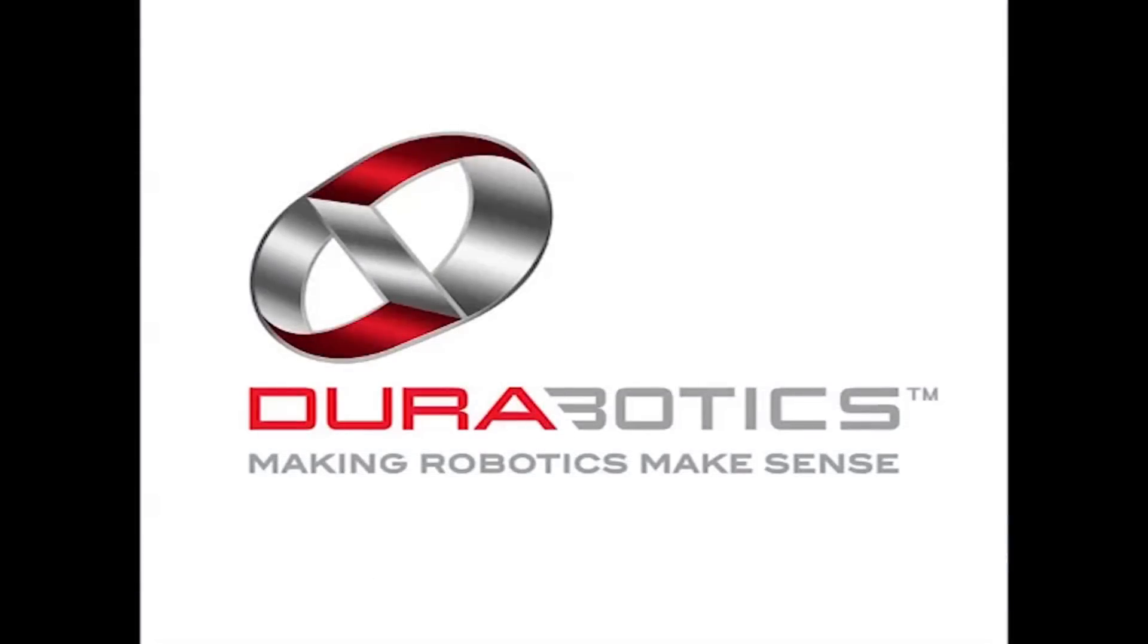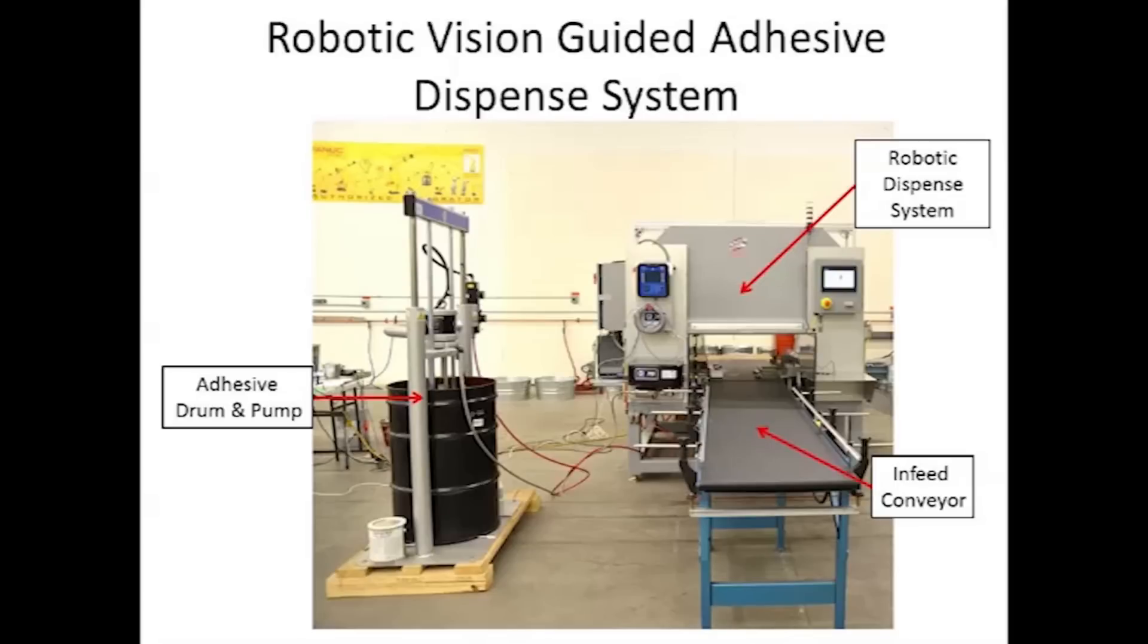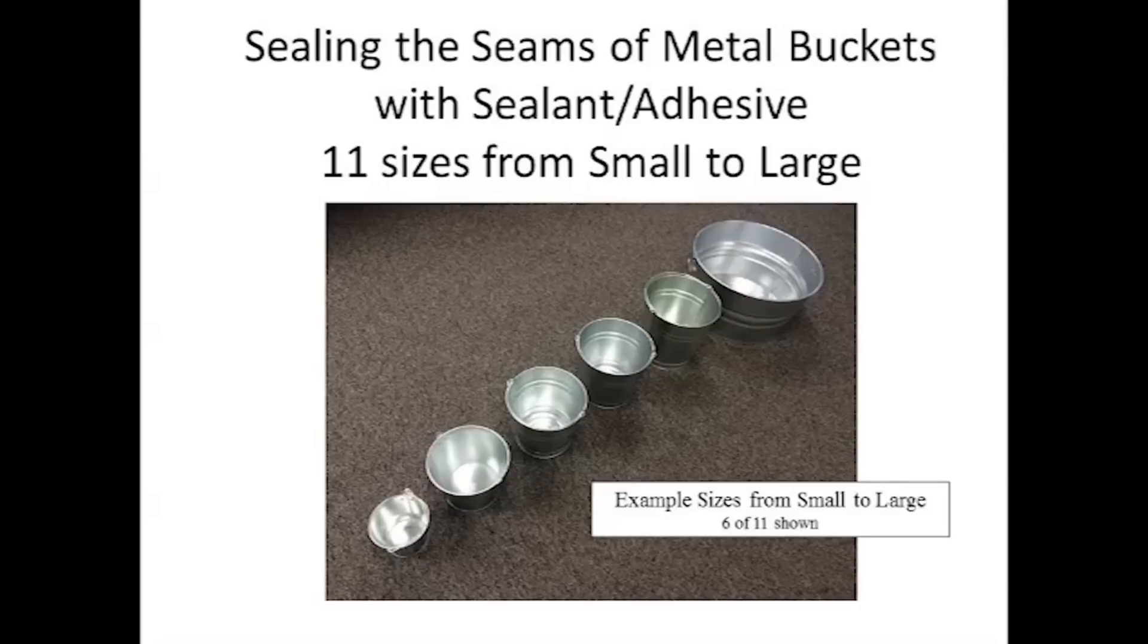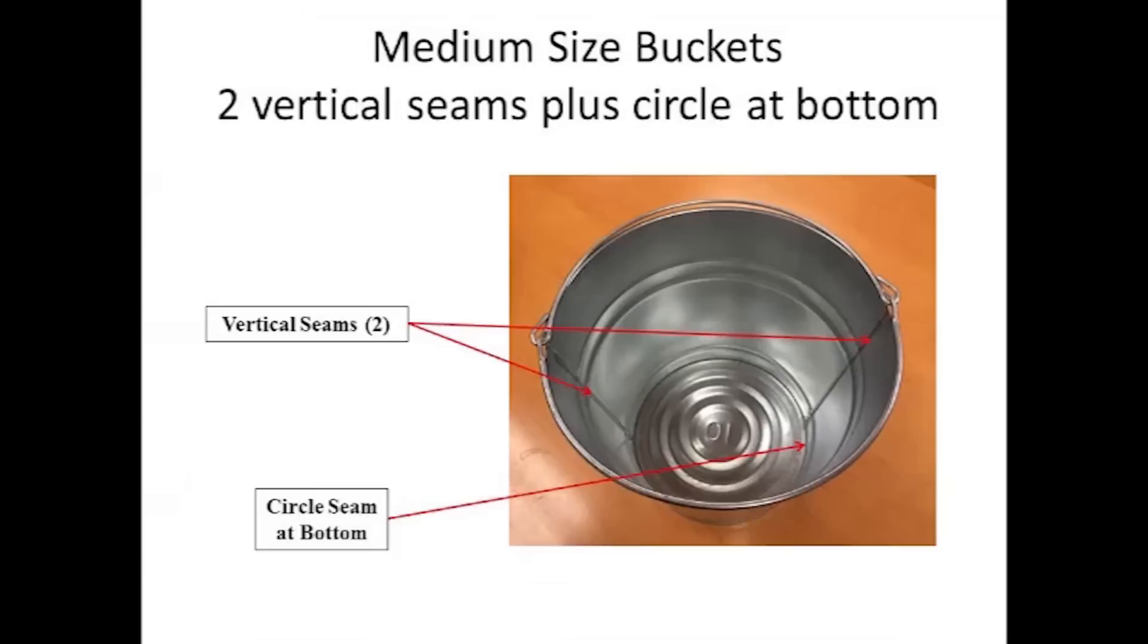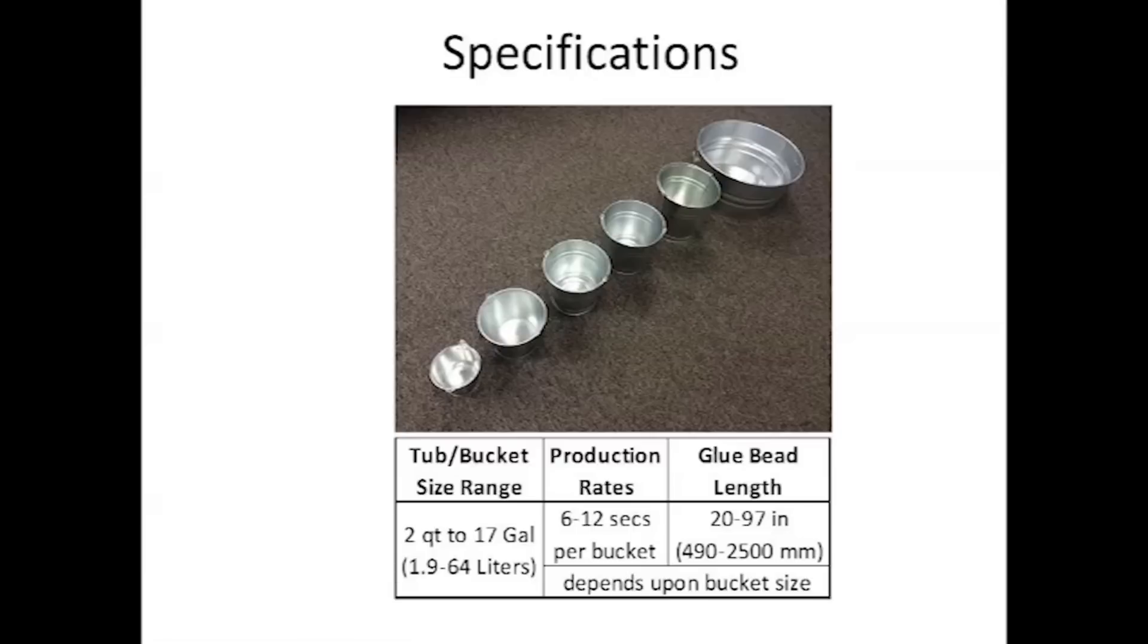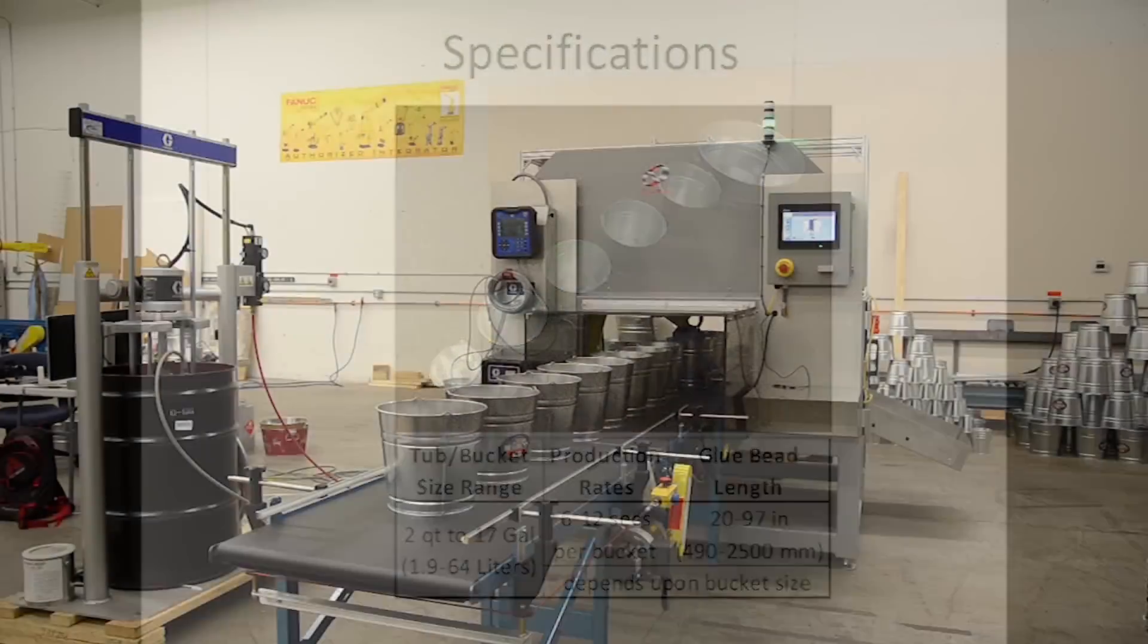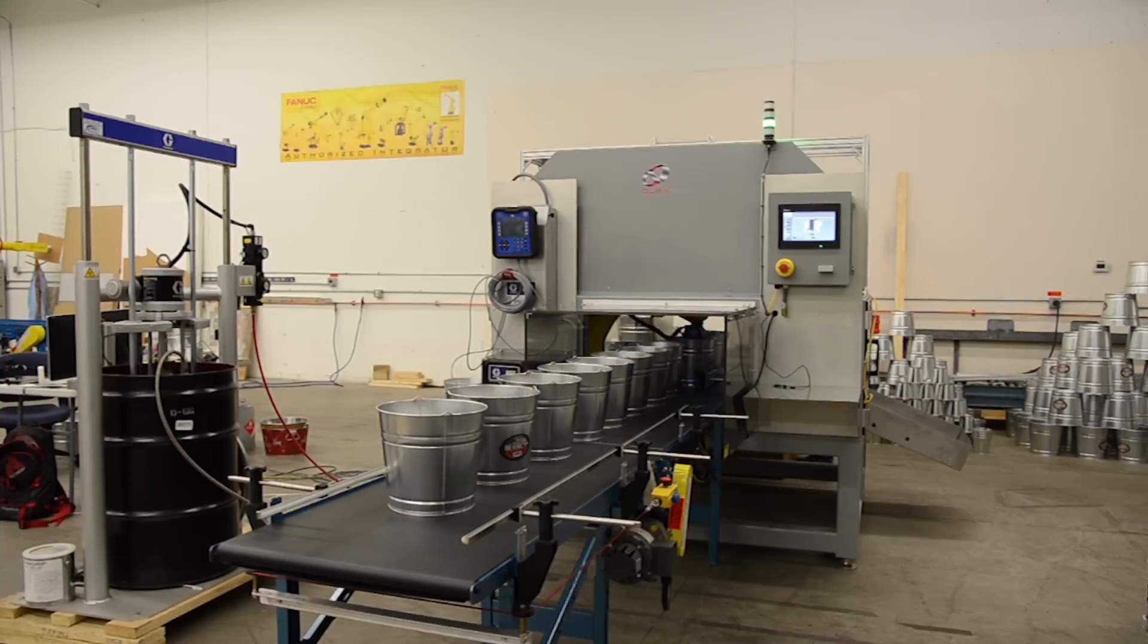FANUC authorized system integrator Durabotics developed this automated system to dispense adhesive onto the seams of buckets and tubs. This extremely flexible and compact system can handle 11 different bucket sizes ranging from 2 quarts to 17 gallons, from 6 inches to 24 inches in diameter and from 5 to 12 inches in height. Production rates range from 5 buckets per minute for larger bucket sizes to 12 buckets per minute for smaller buckets.